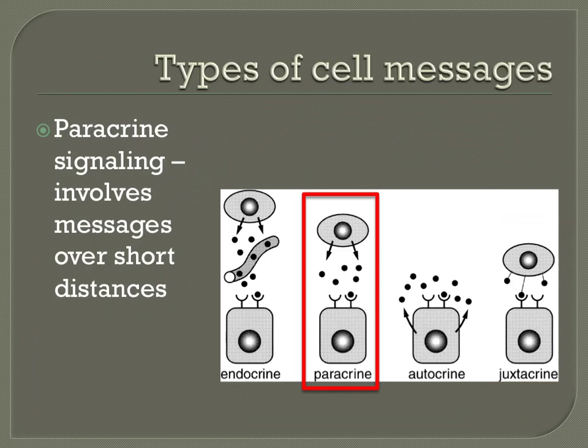Neurotransmitters pass signals across a very short distance between one neuron, or brain cell, and another through what is called a synapse. This would be an example of the second classification of cell signaling covered in this video, called paracrine signaling.